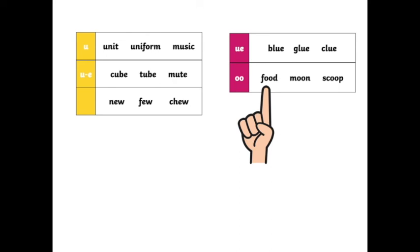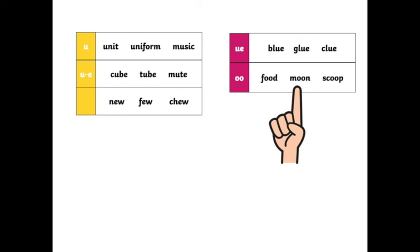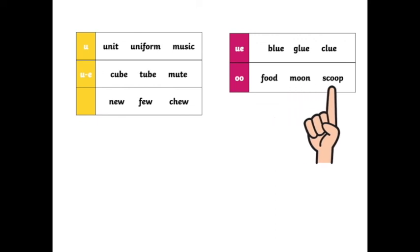T-U-D: Food. M-M-U-N: Moon. Sc-U-pa: Scoop. Very good. So you can see there are different ways of making an A sound, different ways of making an E sound, an I sound, an O sound, and a U sound. Now it will take some practice, but the more you practice the better you become.